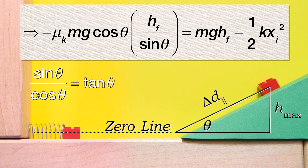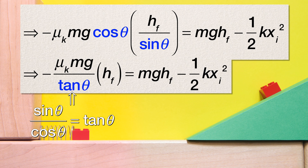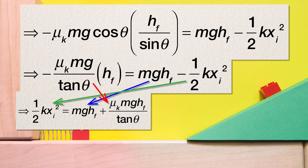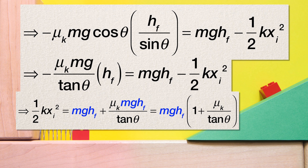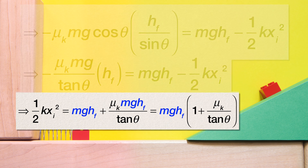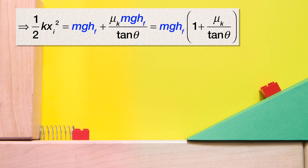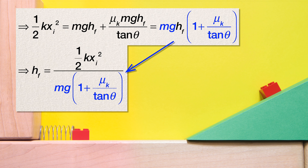Because sine theta divided by cosine theta equals tangent theta, we now have negative coefficient of kinetic friction times mass times acceleration due to gravity divided by tangent theta, all times height final, equals mass times acceleration due to gravity times height final minus one half times the spring constant times the initial compression of the spring squared. Then we multiply through by negative 1 and move gravitational potential energy over to the other side so we can take out the common factor of mass times acceleration due to gravity times height final. Then we can solve for height final by dividing both sides by mass times acceleration due to gravity times the quantity 1 plus the coefficient of kinetic friction divided by the tangent of the incline angle.